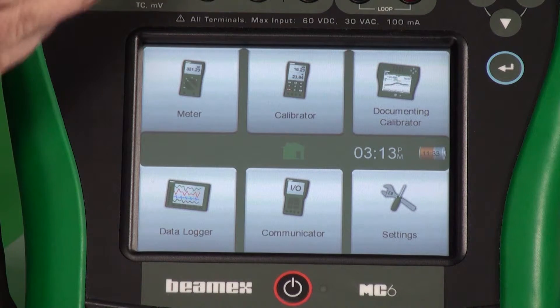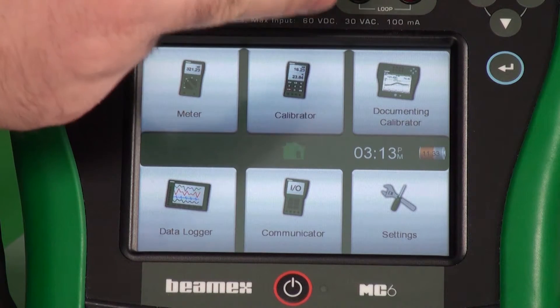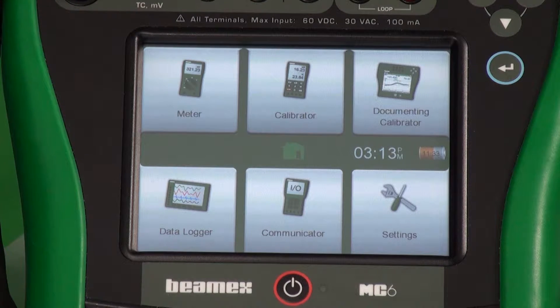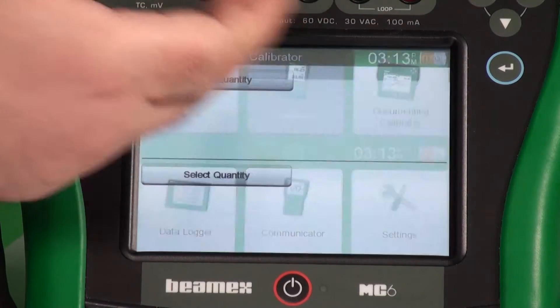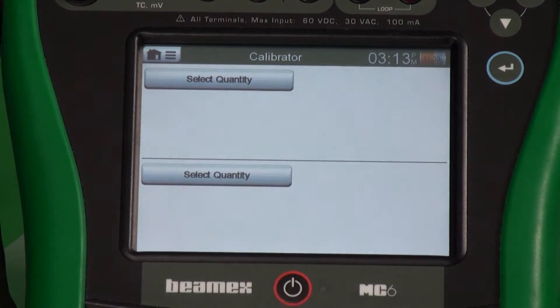On the home screen, we have meter, calibrator, and documenting calibrator. We cover those in other videos. I just want to look at calibrator mode right now. Calibrator mode allows you to source and measure at the same time. You pick your quantities.